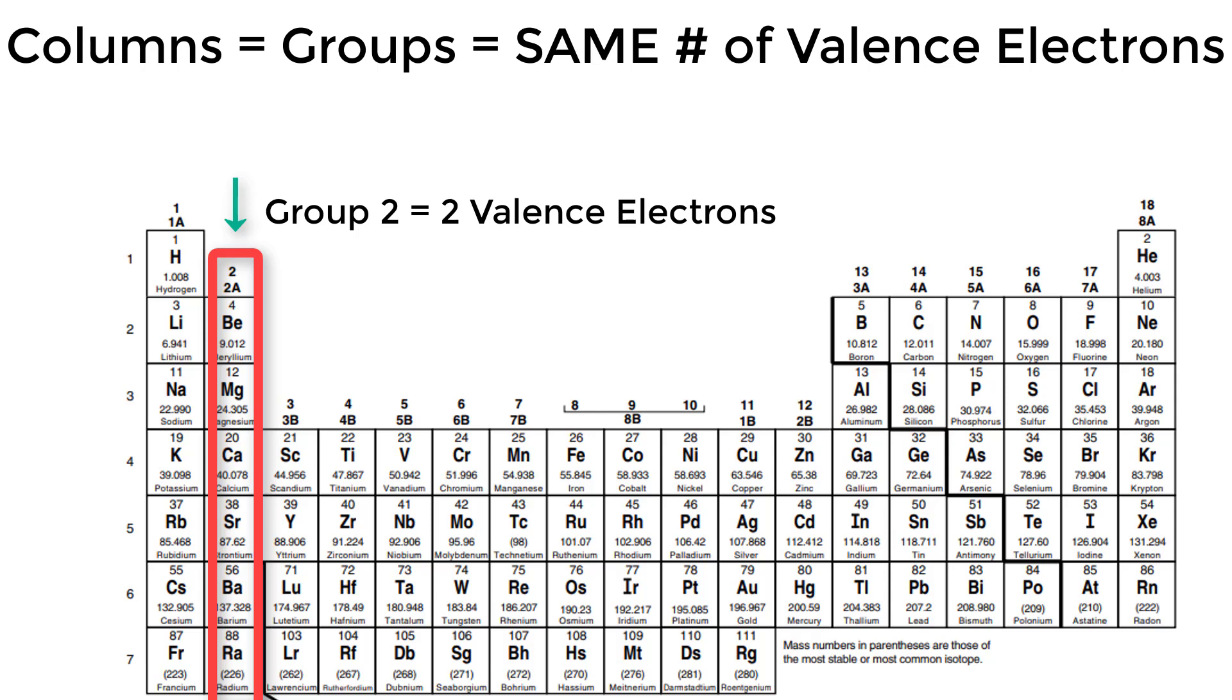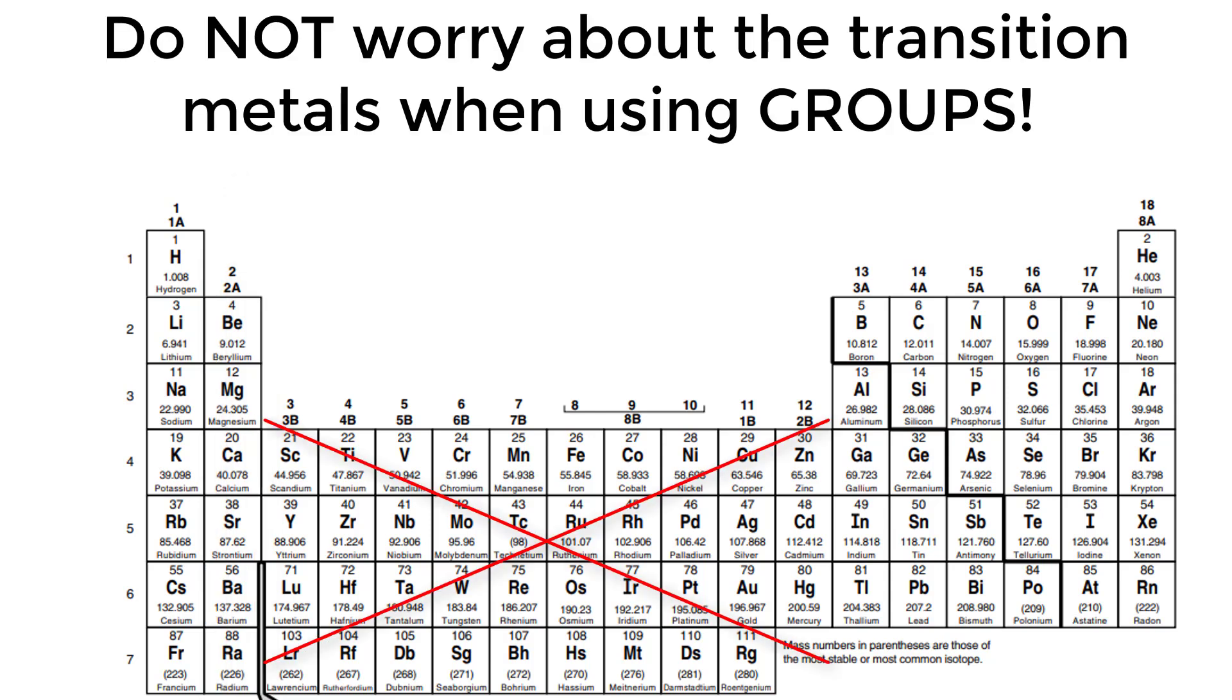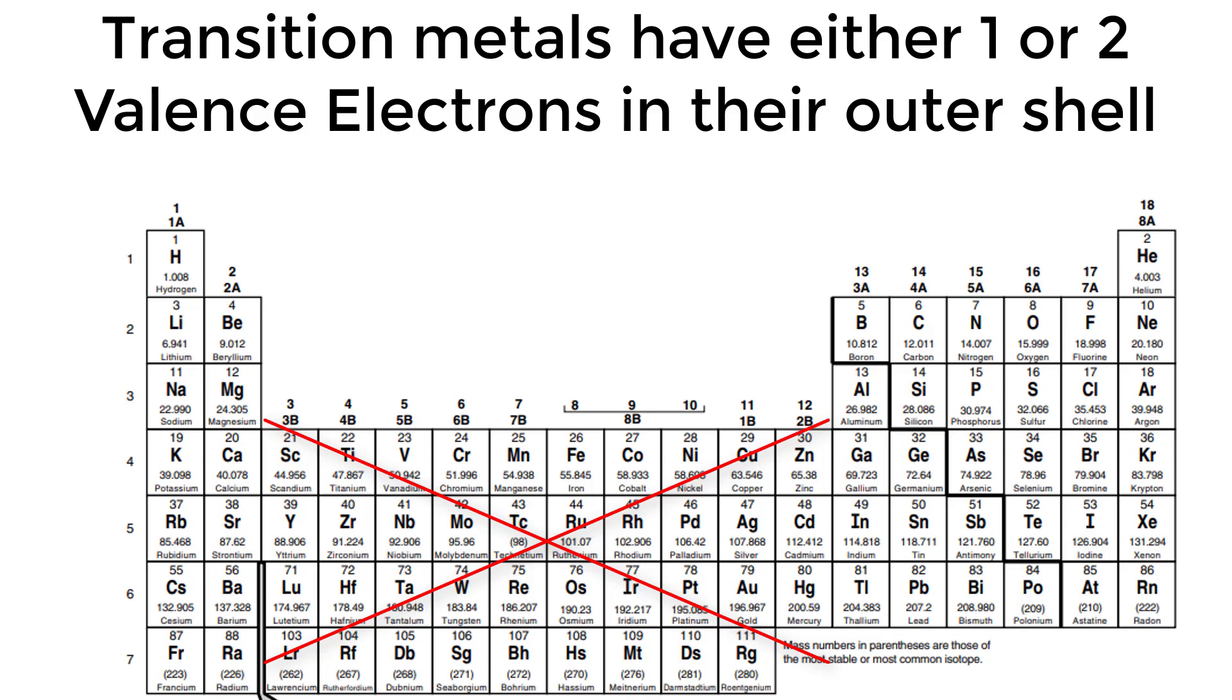We skip over the lower part of the periodic table for this part because these are known as the transition metals, and they either have one or two valence electrons in their outer shell.